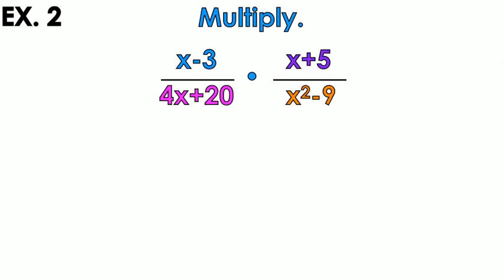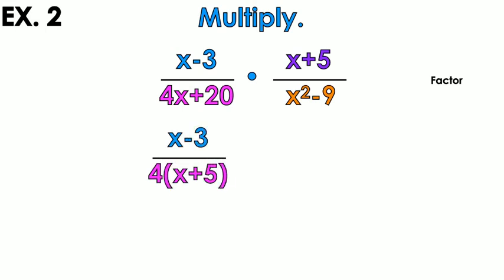Now let's move on to example 2 — the big guns. When we start to have binomials, we do the problem a little differently because I need to see if there's anything I can factor first. Looking at 4x plus 20, that has a GCF. The GCF of 4x plus 20 is 4. So I take that 4 out and get 4 times the quantity x plus 5.